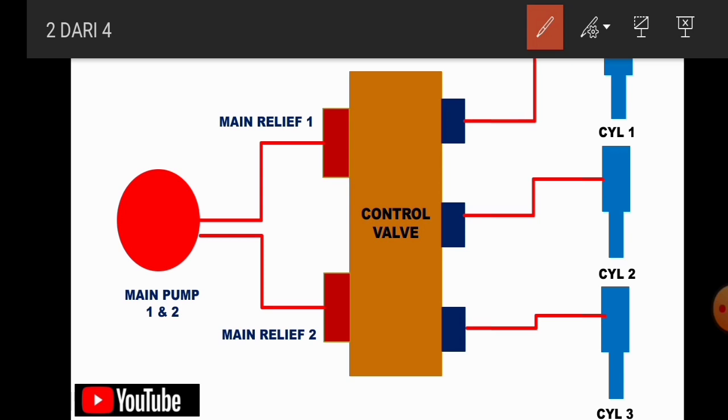Main relief palep pada umumnya dia berada secara skematik yaitu berada antara hydraulic pump dengan kontrol palep. Fungsinya untuk membatasi tekanan maksimum hidrolik sistem yang ada di hidrolik sistem tersebut. Sebagai contoh di eskavator CAT 320, maka dia membatasi tekanannya yaitu sekitar 5000 PSI atau setara dengan 350 kg per cm2. Itu fungsi daripada main relief palep.